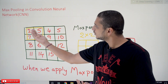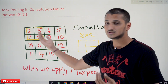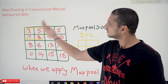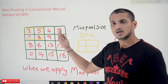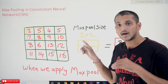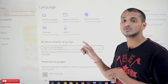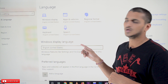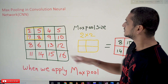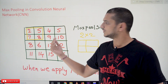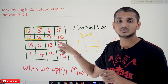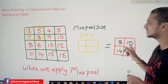Next, we will move this window. Stride equal to 2 means we will move 2 positions to the right. Stride equal to 1 means we move one position to the right. So here we are taking stride equal to 2. The next window covers values 4, 5, 9, 10. Out of these, the maximum value is 10, so 10 is considered.